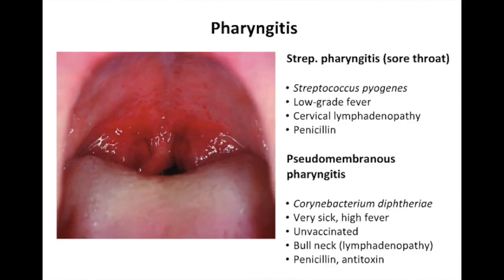Moving higher in the respiratory tree, let's talk about pharyngitis. The main types Step One will ask about: regular strep throat is caused by Strep pyogenes — the patient has scratchy throat pain, low-grade fever, lymphadenopathy usually on one side, and they're not coughing. We do give antibiotics because you do not want that to progress to rheumatic fever and rheumatic heart disease.